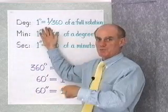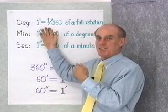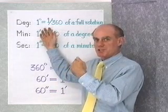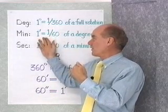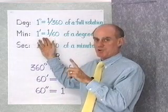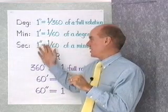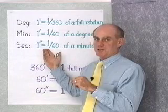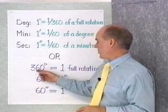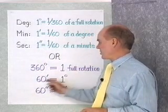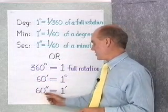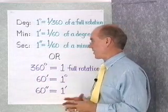1 full rotation — once around for a ray — is 360 degrees. 1 of those degrees divided into 60 equal parts gives 1 minute. Divide that 1 minute into 60 equal parts and you get 1 second. So: 360 degrees is 1 full rotation, 60 minutes equals 1 degree, and 60 seconds equals 1 minute.